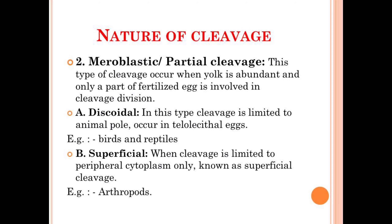Another nature of cleavage is partial cleavage, or meroblastic cleavage. This type of cleavage occurs only when the yolk amount is abundant and only a part of the fertilized egg is involved in the process of division. This type of cleavage is only found in eggs that have a high amount of yolk — for example, birds.